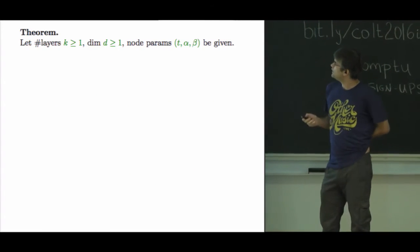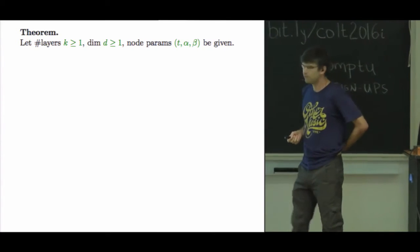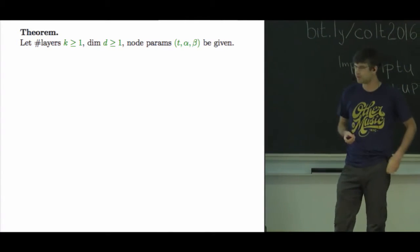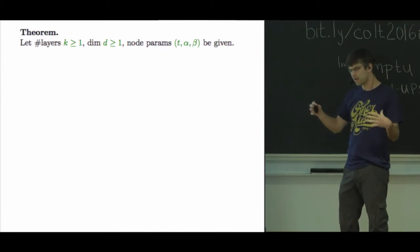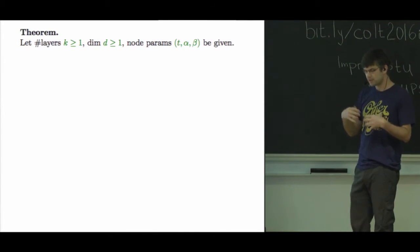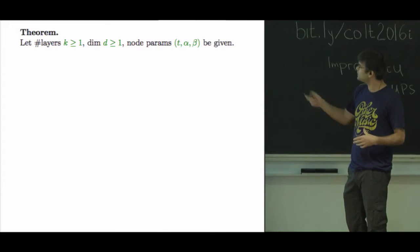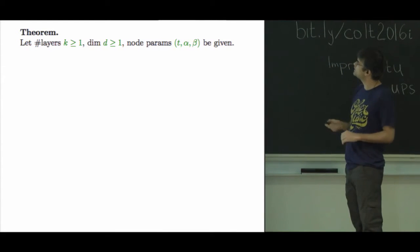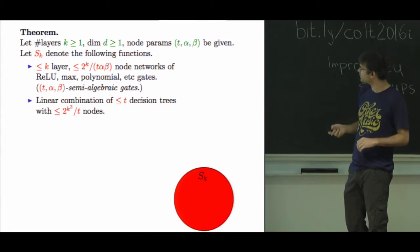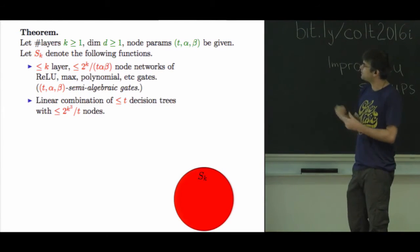Okay, so let me go through the theorem. For maybe only time in my life I can actually give all the real numbers, so I'm gonna do that. We'll have a parameter k. We'll have a function class that's shallow and is not very expressive, parametrized by some number k. So we have this k-layer thing, dimension d, and some parameters that I'll describe. The complexity of the network (t, α, β) - these will be kind of nuisance parameters.